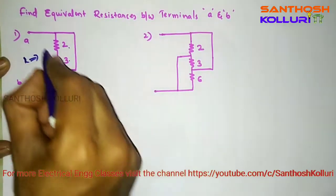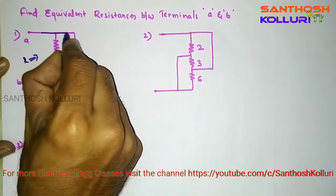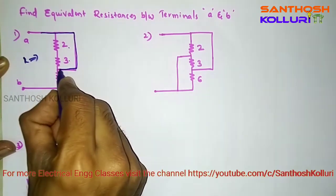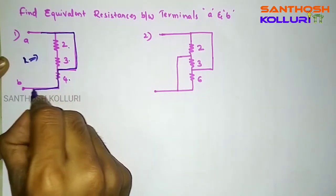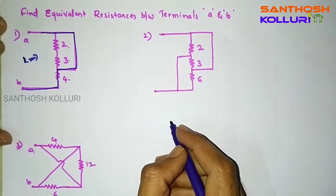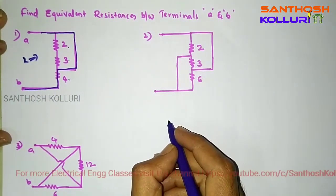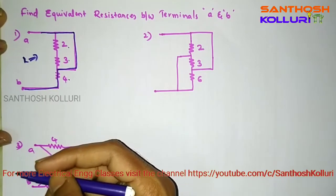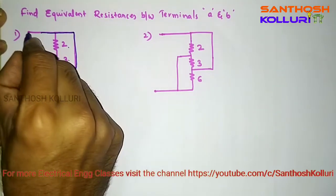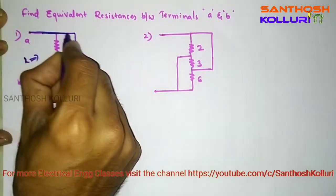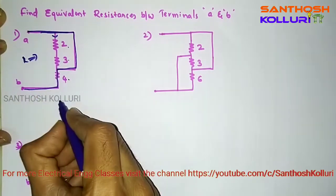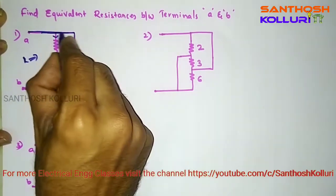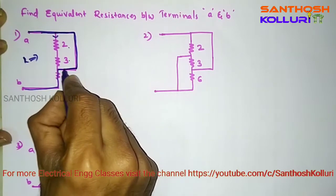If you clearly observe here, this circuit is shorting these two terminals. We know that current will always choose the least resistance path. Therefore, current will enter and it will not go through the 2 ohm and 3 ohm resistors (the 5 ohm path), because we are having a zero resistance path here.